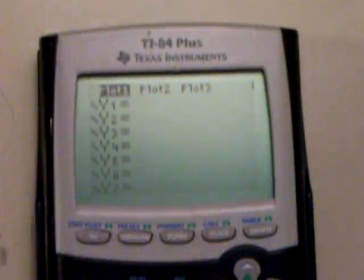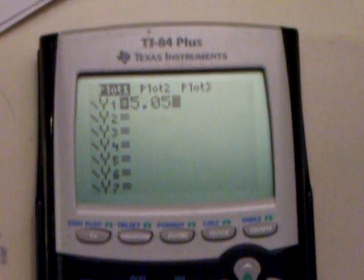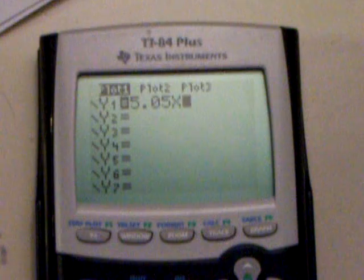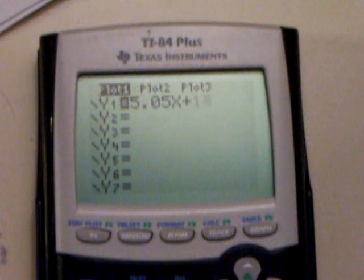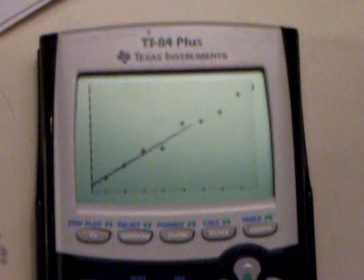So once you have that, you're going to go to Y equals. You're going to type in the equation. So 5.05x plus 10.54. And you're going to click graph again. And there's your line of best fit. Alright.